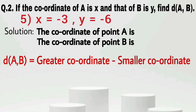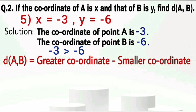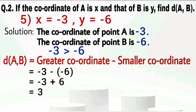The fifth case: X equals minus 3 and Y equals minus 6. The coordinate of point A is minus 3 and the coordinate of point B is minus 6. Minus 3 is greater than minus 6. Distance between A and B equals minus 3 minus (minus 6). Minus minus becomes plus, so minus 3 plus 6 equals 3 — that is, 6 minus 3 equals 3 — and the sign of the greater number, 6, is positive. Therefore the distance between A and B is 3 units.